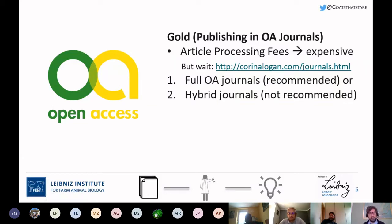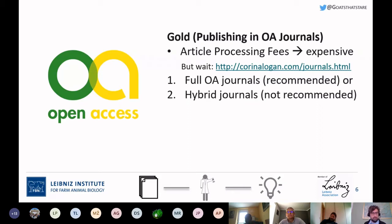When choosing gold open access, you can publish in full open access journals — which I personally recommend — compared to publishing in hybrid journals. With hybrid journals, such as Applied Animal Behavior Science, your library pays a subscription for access, and if you want your paper open access, you pay an additional article processing fee on top. In hybrid journals, you essentially pay the publishers twice, and we're all familiar with the discussion about how ethical their publishing models are.